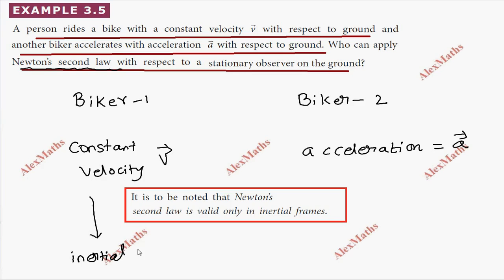Constant velocity means an inertial frame. If there's acceleration, it's a non-inertial frame.